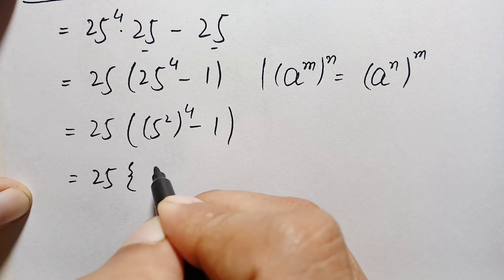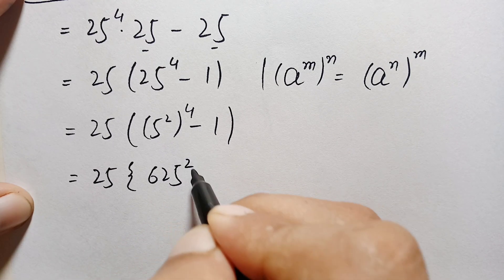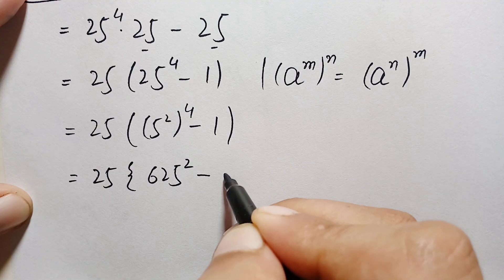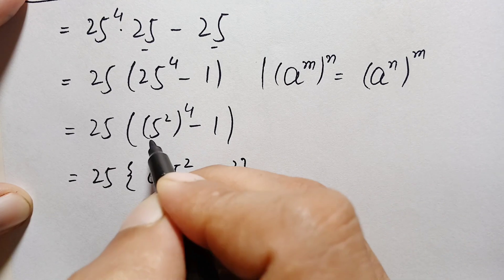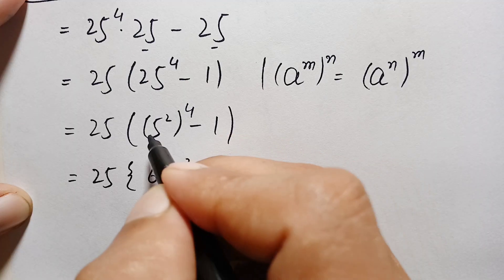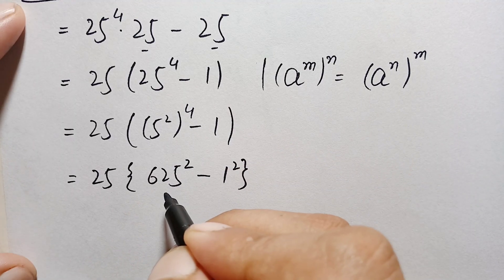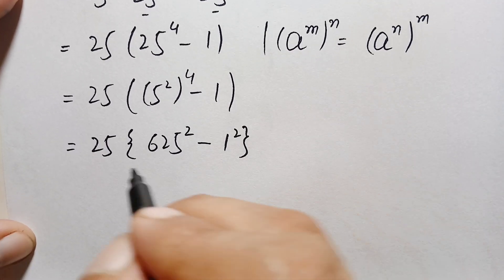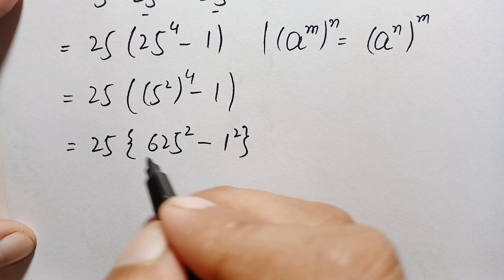Continuing, this becomes 25 times 625 raised to power 2 minus 1 squared, since 5 raised to power 4 equals 625. So we now have 25 times (625 squared minus 1 squared). Here we will use another algebraic identity.